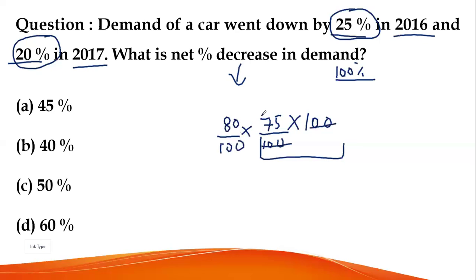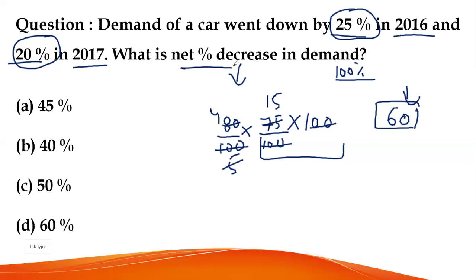So 100 cancels with 100; in the table of 5, 75 cancels — 15 remains; 15 × 4 = 60. So the result is 60. To find the net change, compare initial to final: initial was 100, final is 60, meaning a decrement of 40. So the net change is a 40% decrease. Option B is the answer.